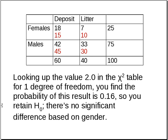If you look up 2.0 in the chi-squared table with one degree of freedom, you'll find that the probability of this result is 0.16, so you retain the null hypothesis — there's no significant difference in littering or garbage-depositing behavior based on gender. We'll talk a little bit later about how that degrees of freedom was calculated.